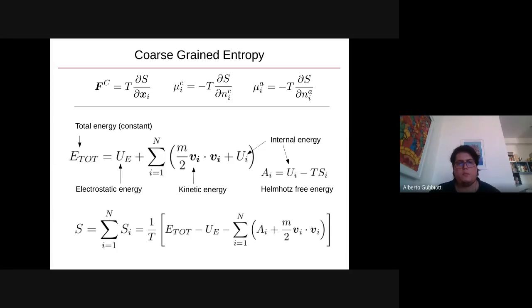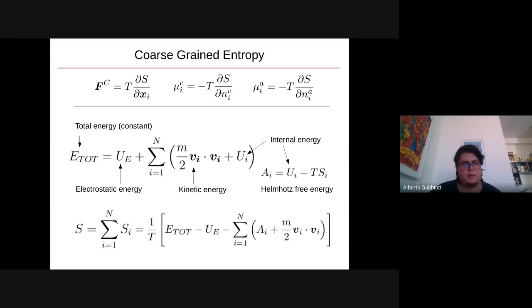To model the coarse-grained entropy, we consider the total energy to be equal to a part including the electrostatic energy, a part including the kinetic energy of the mesoparticles, and a contribution of the internal energy of each mesoparticle. Assuming that each mesoparticle is locally at thermodynamic equilibrium, we relate the internal energy with the entropy of the mesoparticle. Assuming that the coarse-grained entropy is the sum of all the entropies of the particles composing the system, we obtain an expression for the coarse-grained entropy in which the only terms yet to be specified are the electrostatic potential energy and the Helmholtz free energy of the system.